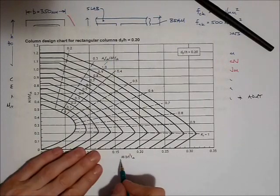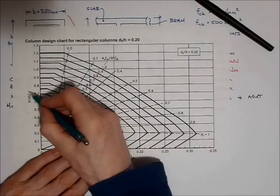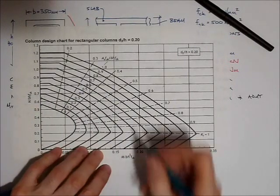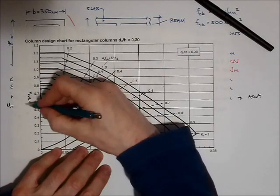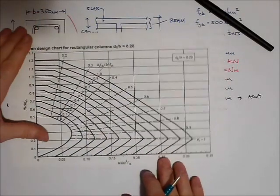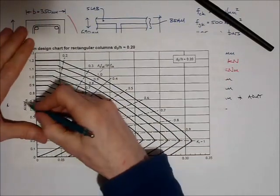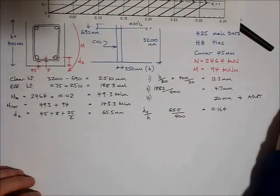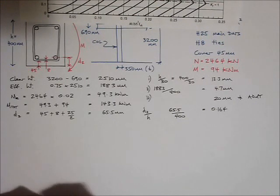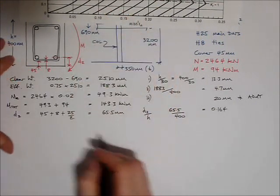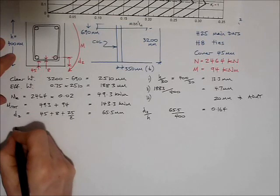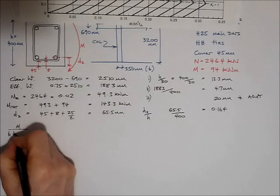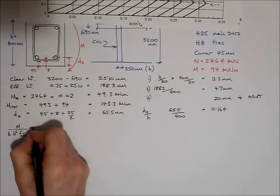This design chart makes use of two factors. The bending moment divided by some factor of the column and the axial force divided by some figures from the column. So let's have a look at each of those two axes so that we can make use of the column. So the first one across the bottom is M over B H squared F C K.